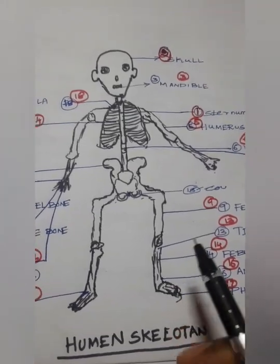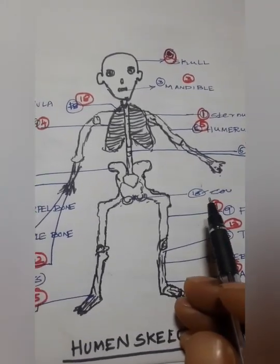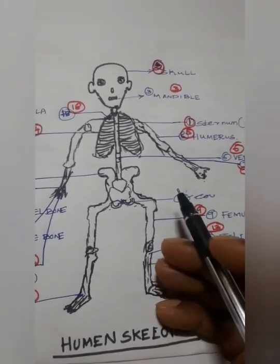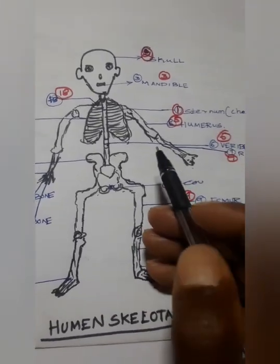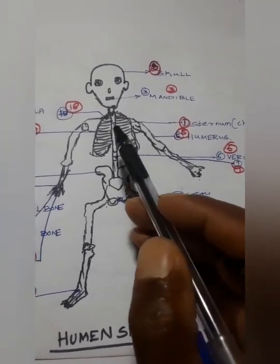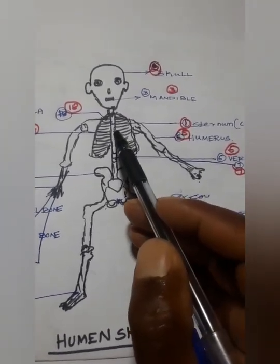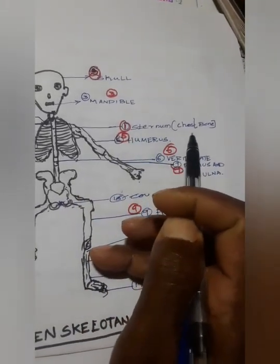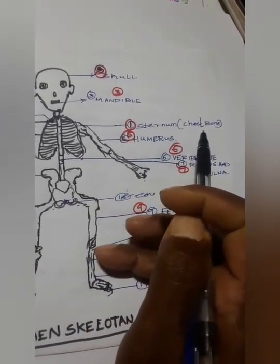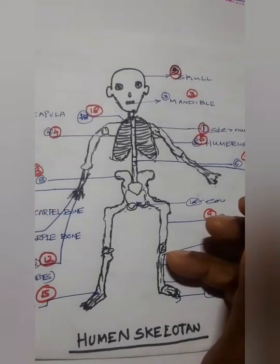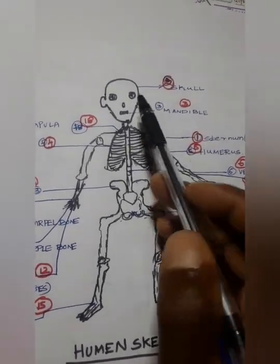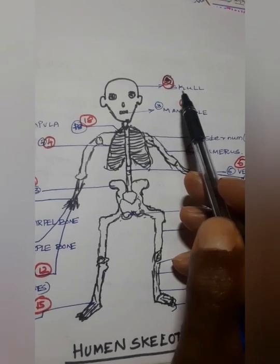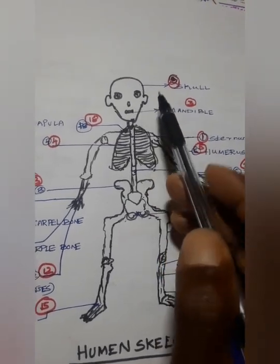Hi friends. Now we see basically the illustration with the human skeleton and its parts. Press the bone — so we see the sternum, the chest bone. Number 2: skull, the head bone.